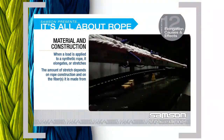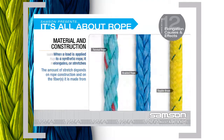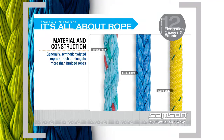When a load is applied to a synthetic rope, it elongates or stretches. The amount of stretch depends on both the rope's construction and on the fiber or fibers it is made from. In general, for synthetic ropes made from the same fiber, twisted ropes stretch or elongate more than braided ropes.